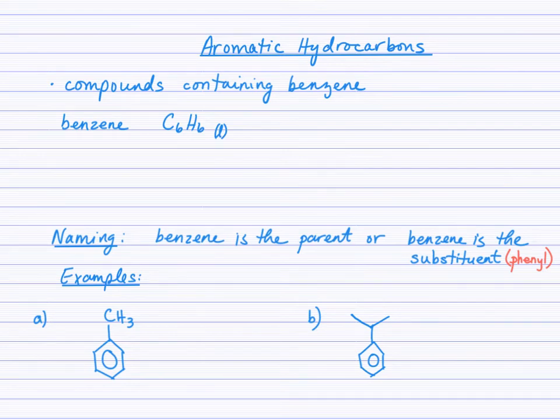Aromatic hydrocarbons. Aromatic hydrocarbons are compounds that contain benzene. The chemical formula of benzene is C6H6, so that's a structure that you want to become quite comfortable with.